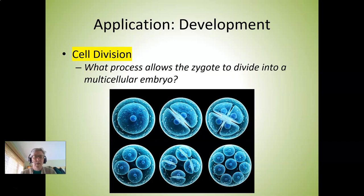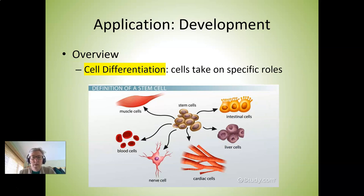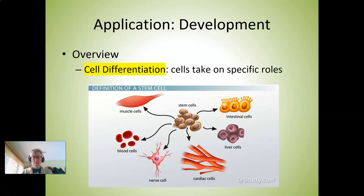The problem is that if mitosis is all that happened, we'd have a giant clump of undifferentiated cells that didn't have jobs to do. So after cell division, those cells need to differentiate — take on their specific function or role. In the middle of this picture we see pluripotent stem cells, which have the potential to differentiate into multiple different cell types such as muscle cells, blood cells, liver cells, etc. Differentiation is the process by which cells become specialized in structure and function.